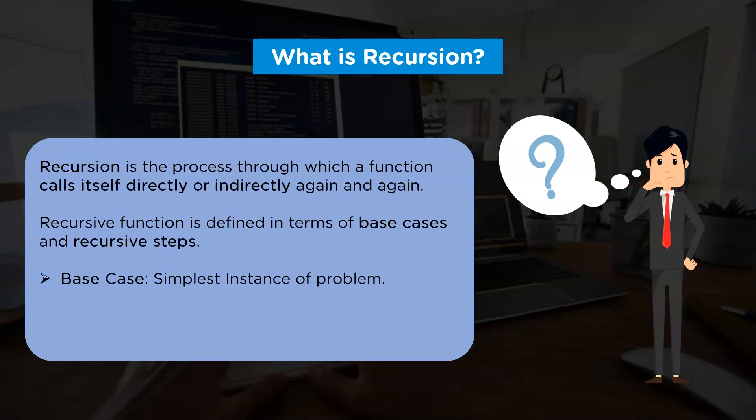The base case is nothing but the simplest instance of a problem that consists of condition which holds the recursive function. Given the function calls argument, this base case computes the output of our program right away. Whereas in the recursive step, we compute the result using one or more recursive calls to the same function, but with the inputs decrease in size or complexity.